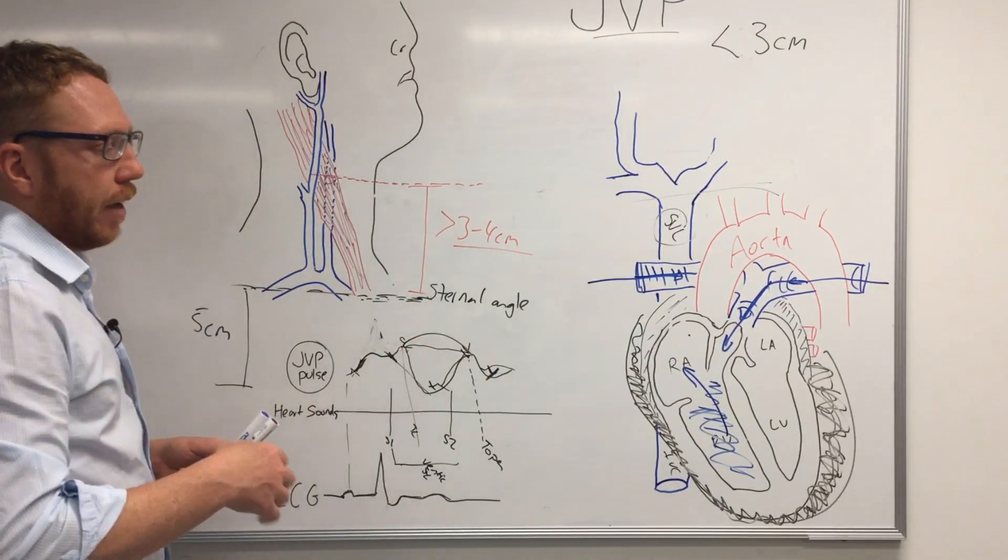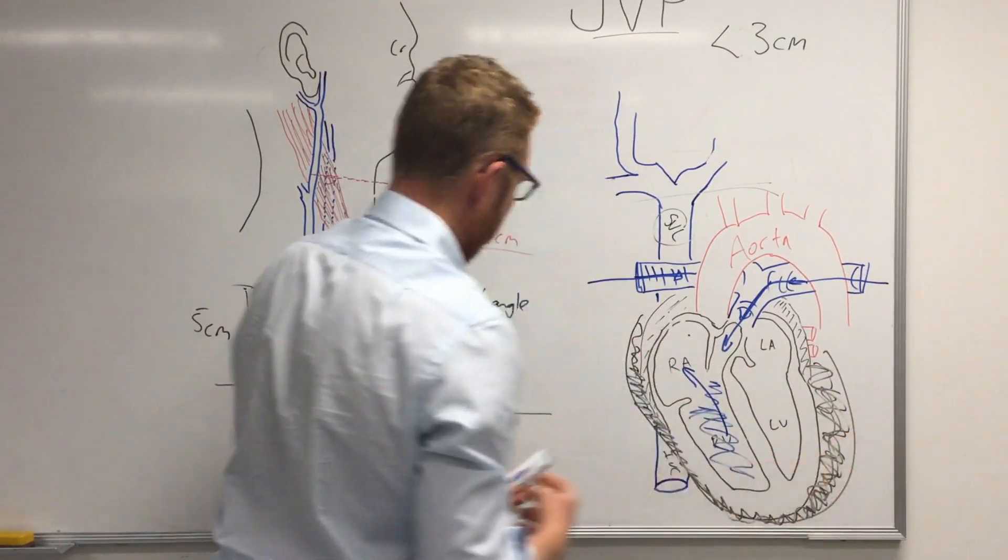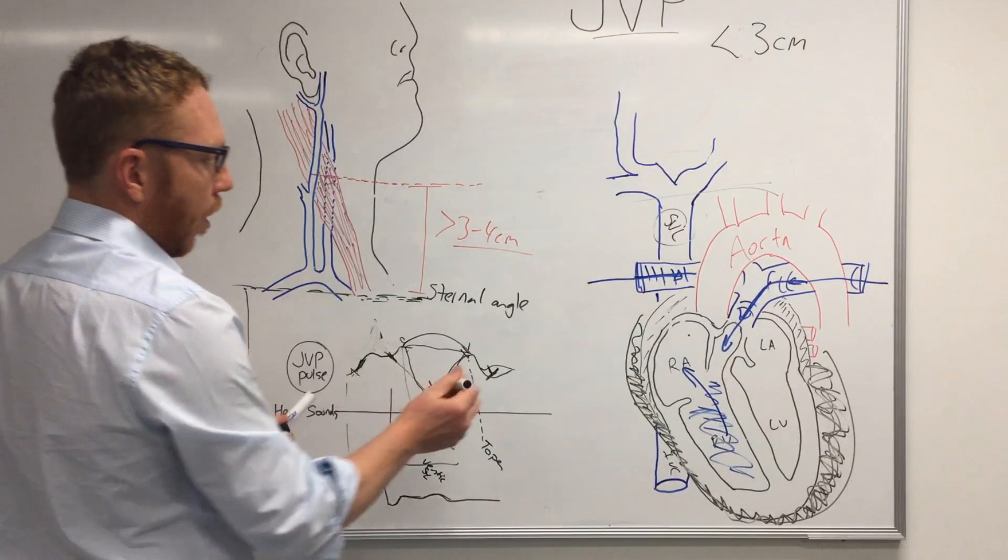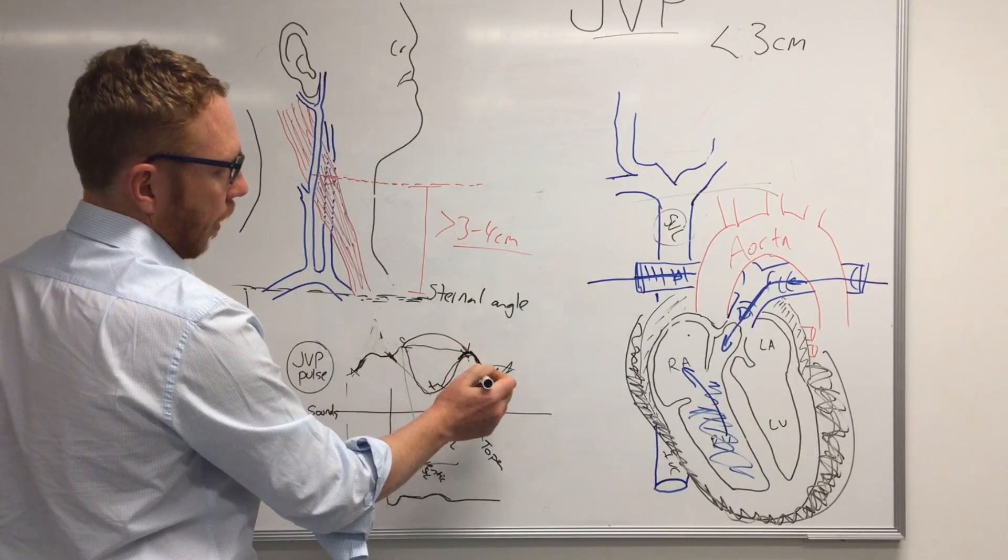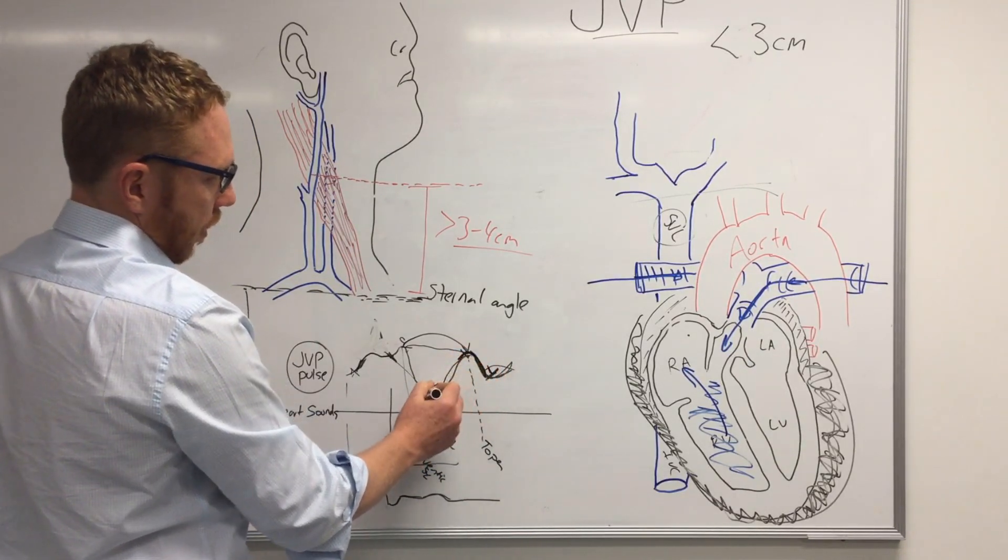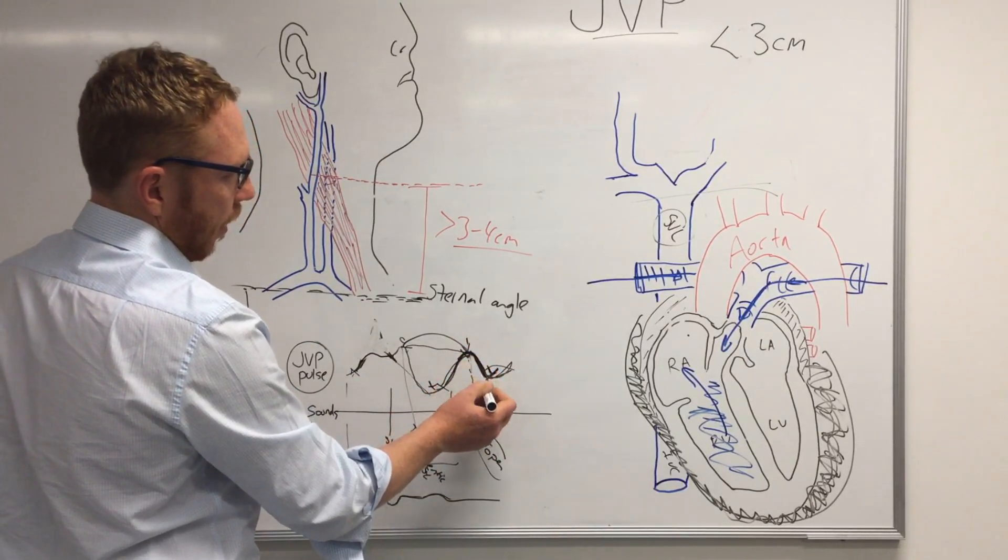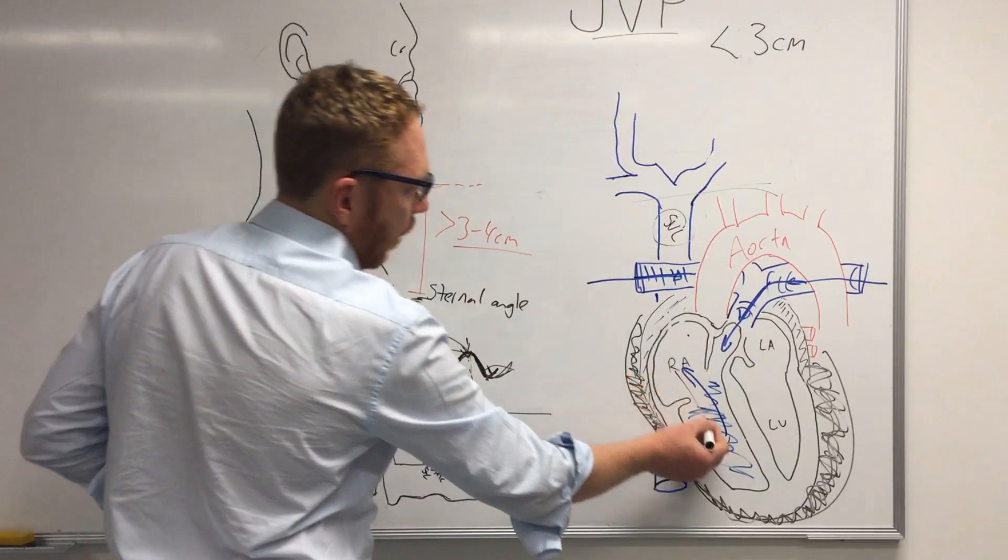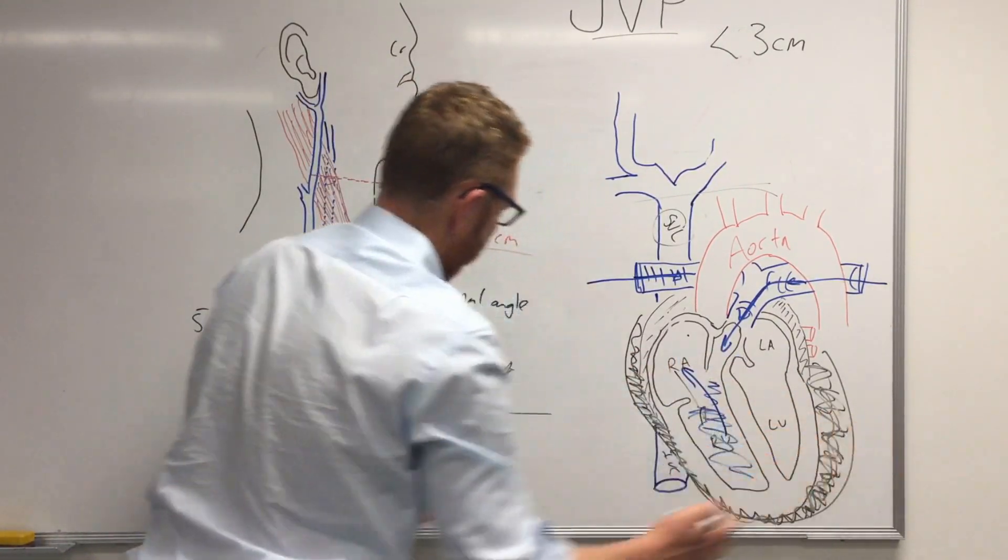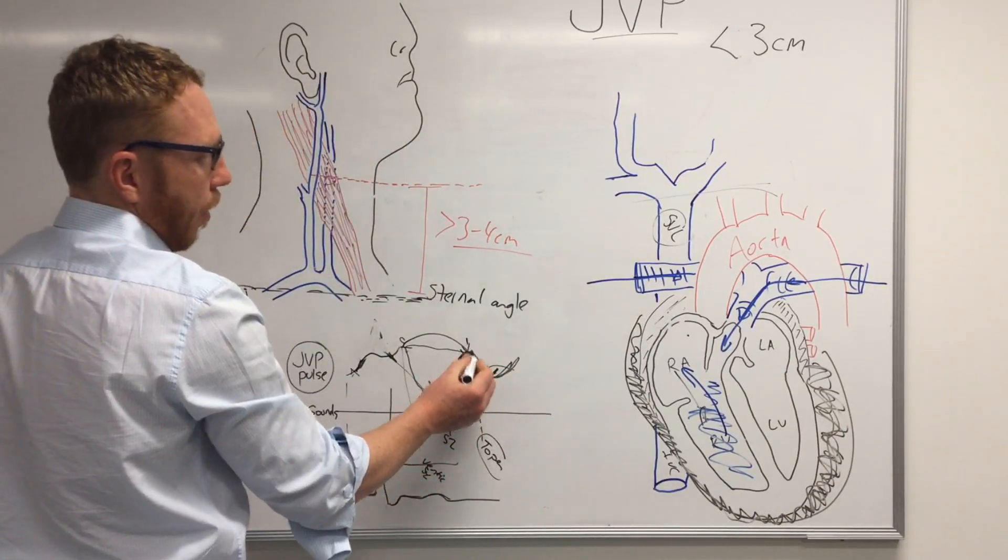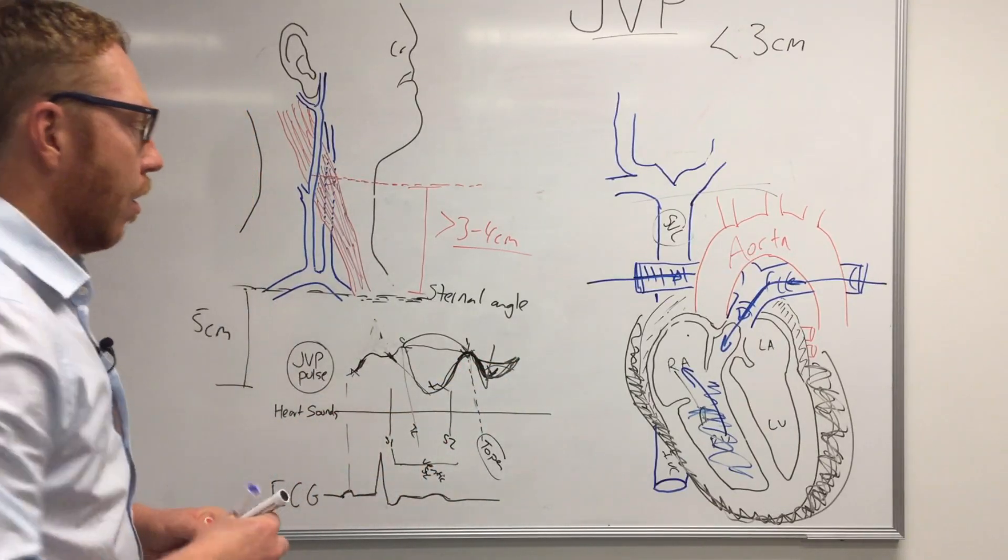And then finally, we might see in the pericardial problems, where it's a problem with opening, we might see changes in the Y wave, because this is the atrial emptying. So it's gone up, the tricuspid valve has opened, and the atria is now emptying. So if you've got a problem with the heart being able to open, you're going to have a problem with this wave. And it might be a sharp wave, or it might be a shallow wave. And that's an example of problems there.